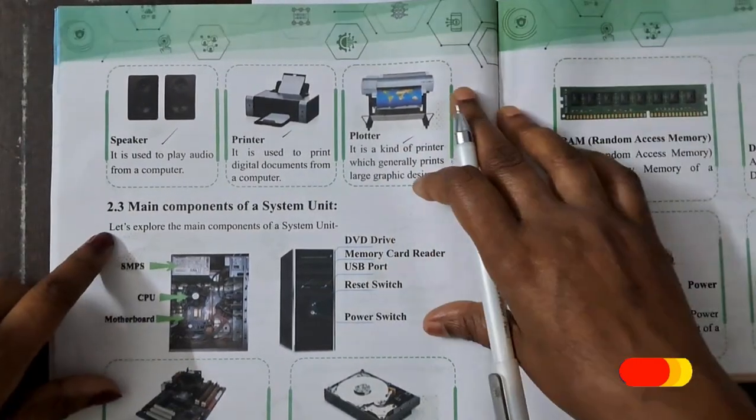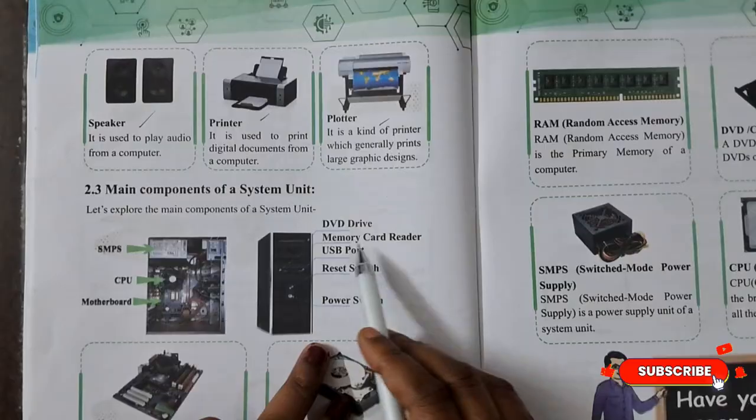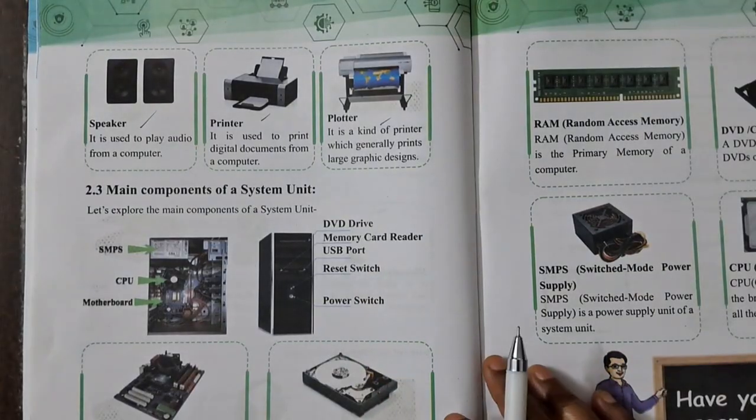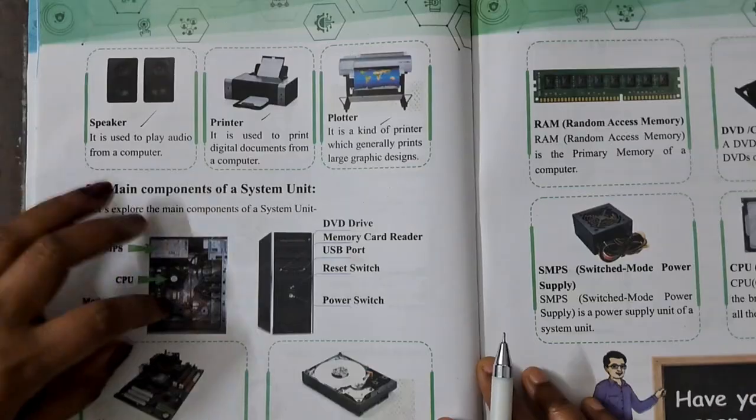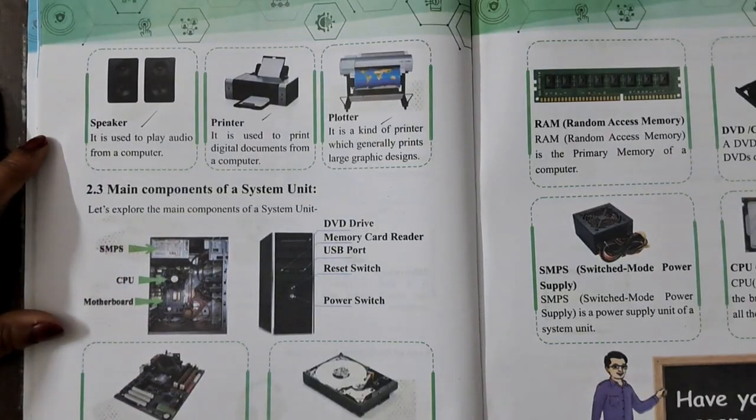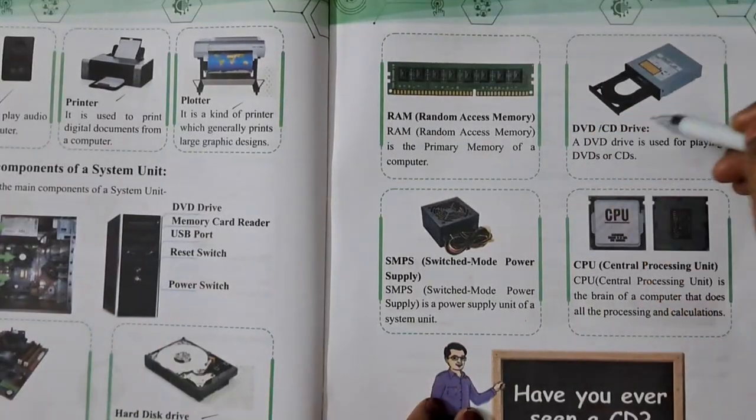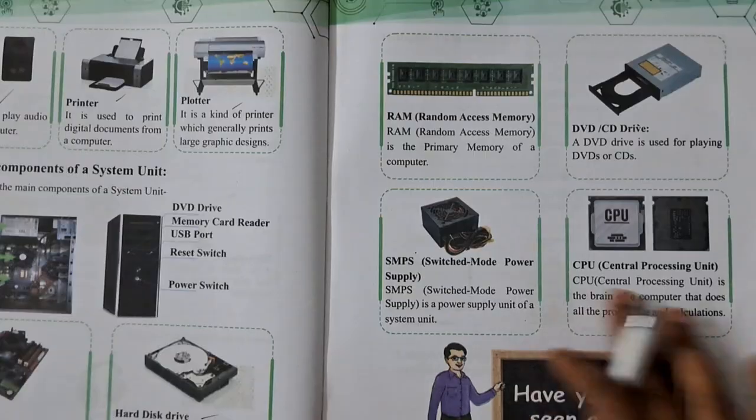Main components of system unit: DVD drive, USB port, reset switch, power switch, SMPS, CPU, motherboard, hard disk drive, RAM, DVD, SMPS, CPU server.